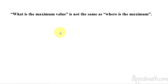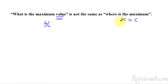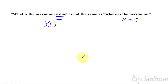Last thing: make sure you understand that when a question asks what is the maximum value, that is not the same as where is the maximum. Where is the maximum means the x value — you say x equals c. But what is the maximum value means a y value — you take the function and plug in the x location to get the y value. On a multiple choice exam, you might see maximum value as the question but see the x value as one of the answer choices, which is a trap. Read the problem carefully and make sure you plug it in to find the y value.